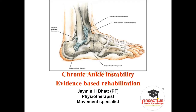Welcome to proactivephysioknowledge.com. Today we are going to discuss chronic ankle instability and evidence-based rehabilitation. Lateral ankle sprains are reported as one of the most common musculoskeletal injuries, observed in sports as well as in the general population. About 40% of individuals who sustain a lateral ankle sprain develop chronic ankle instability, though some literature suggests only 20% convert to lateral ankle instability.